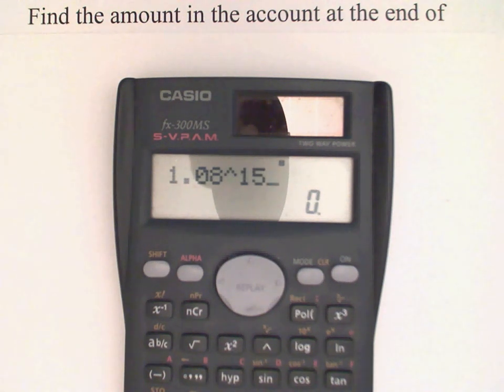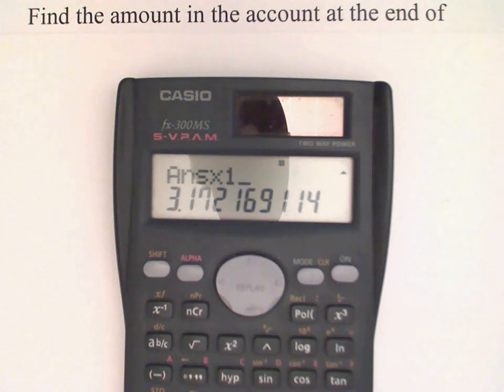There it is, and then press equals. And I get my answer: 3.172. And multiply by my original amount, which is a thousand. $3172.17, rounded to the nearest cent.